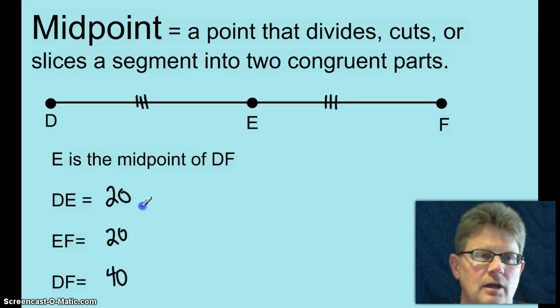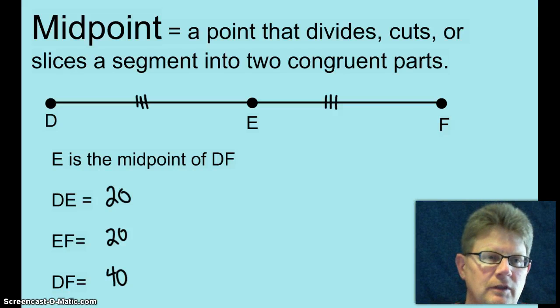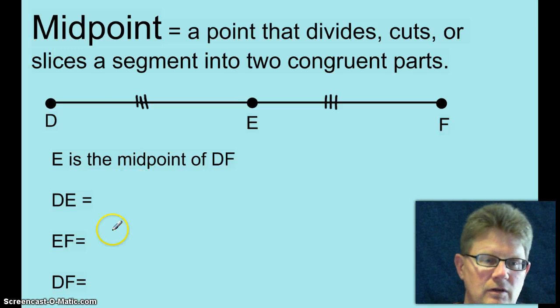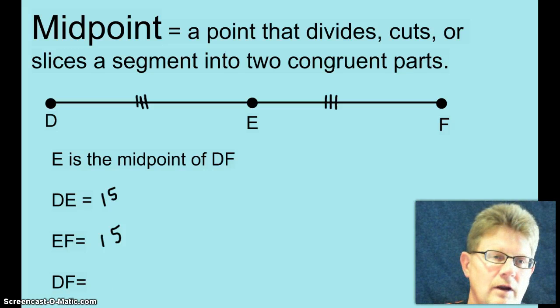And I know you're saying, come on Manning, give me something that's a little bit harder than that. Okay, fine. How about if I tell you that EF is 15? Does that mess you up? No, you can still find that DE is 15 and that DF is 30. Right? All right.